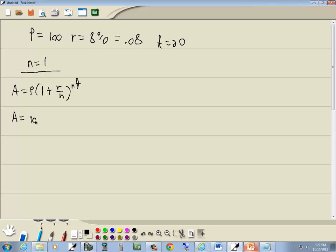So let's plug in what they give us. P is 100, 1 plus R, which is 0.08, divided by n, which is, oops, try that again. What was n? n is 1.